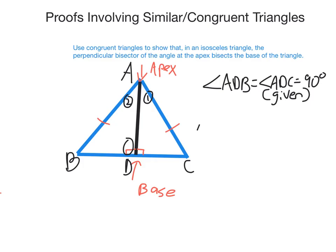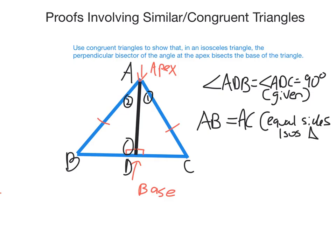I know that AB equals AC — that's just the properties of an isosceles triangle. I'm going to write equal sides and abbreviate it as isos triangle. It's good that we did that lesson on geometry a few lessons ago just to remind ourselves of these properties.